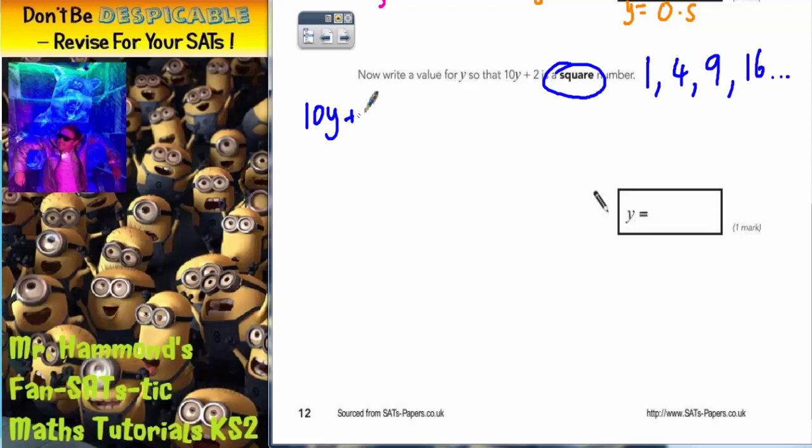So 10y plus 2, let's try it, equals 1. Let's see what we get. Well, y multiplied by 10, add 2, equals 1. Now let's reverse it backwards.